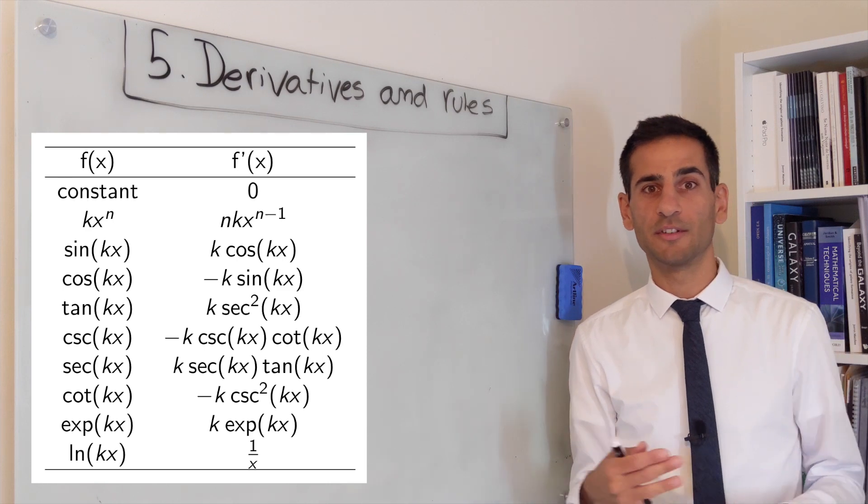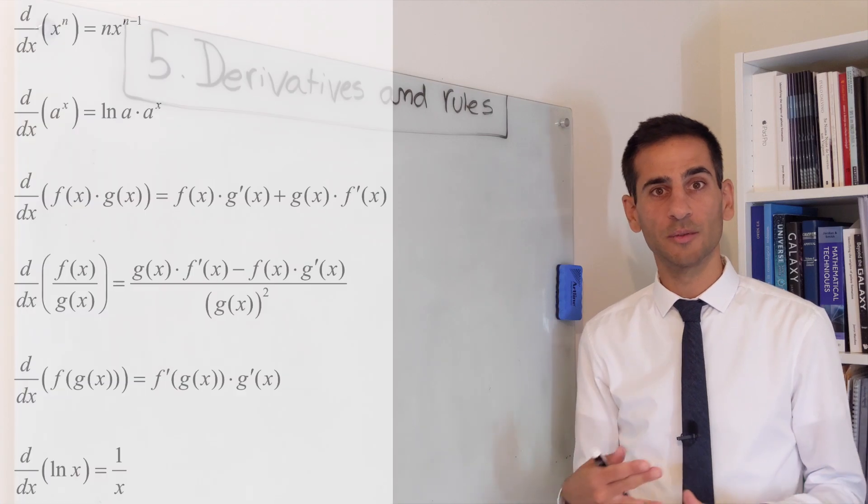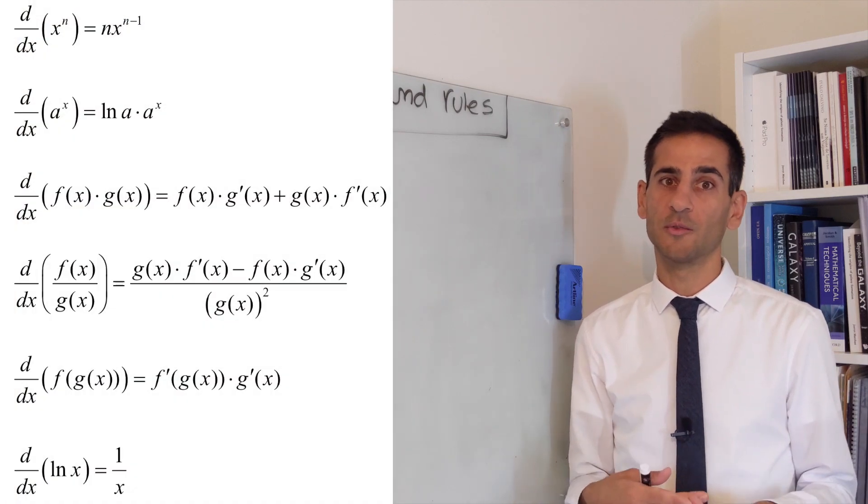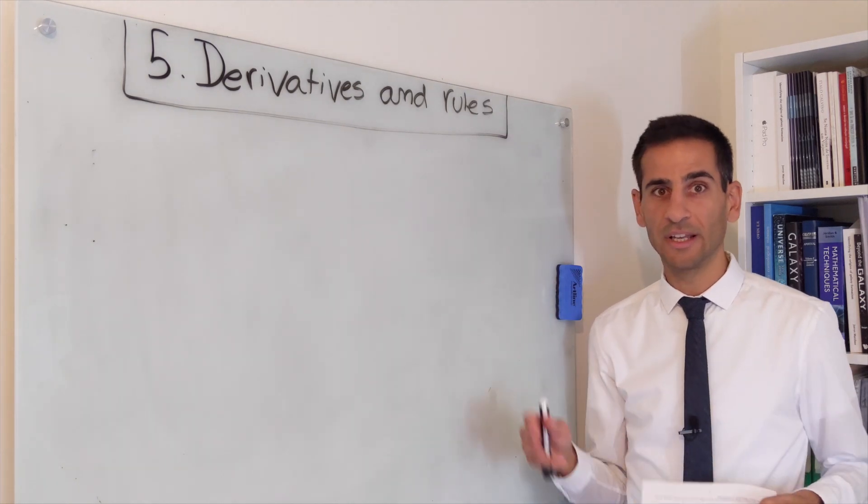For example, the derivative of sines, cosines, exponent rule, but then also moving to product, quotient, sum rules, and obviously the rule to rule them all, chain rule.